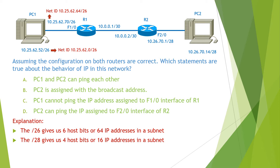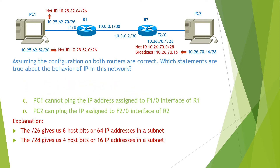Now let's look at this portion of the network. As we can see, the interface F20 and PC2 belong to the same network. PC2 has the network 10.26.70.0/28, and this network has the broadcast address 10.26.70.15, which means PC2 can ping to the interface F20. Also, PC2 is not assigned with the broadcast address. Therefore, the answers for this question are C and D.